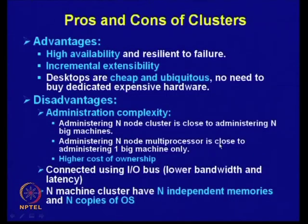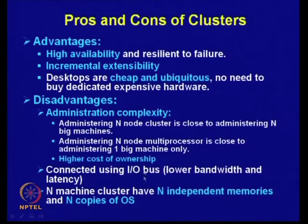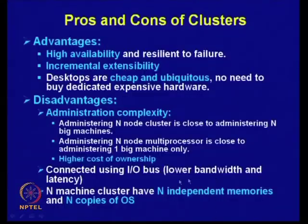In contrast, administering an N-node multiprocessor is like administering one big machine. Clusters also give higher cost of ownership. Another disadvantage: computers in a cluster are connected through IO buses, which have smaller bandwidth and higher latency compared to memory buses in shared memory multiprocessors. An N-machine cluster also has N independent memories and N copies of the operating system, since each node operates independently. Large computers amortize cost over fewer systems leading to higher unit cost, whereas in clusters you have many low-cost systems, resulting in much lower overall cost.